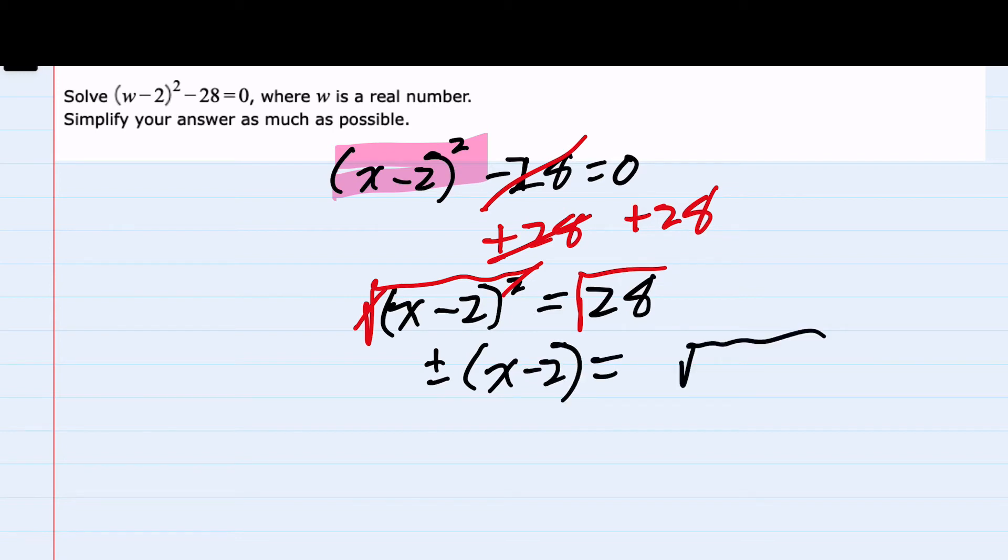To simplify the square root of 28, I should ask myself if I can write it as a perfect square being multiplied. And 28 is 4 times 7, so the 4 being a perfect square, I can take the square root of 4,